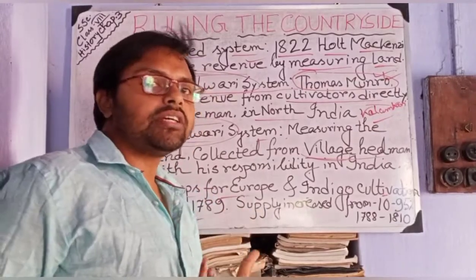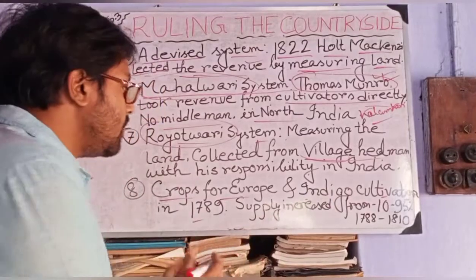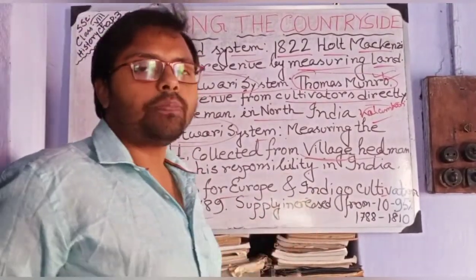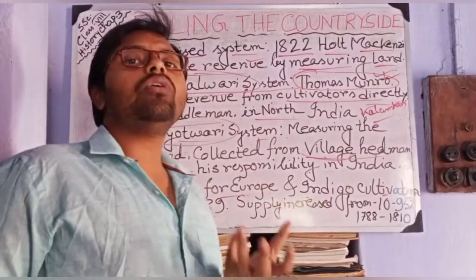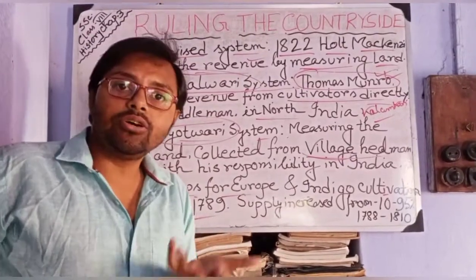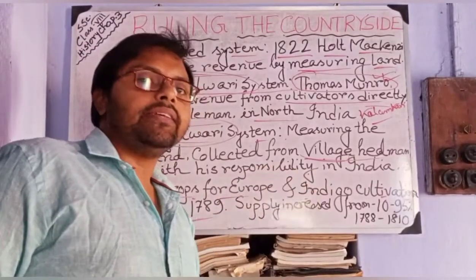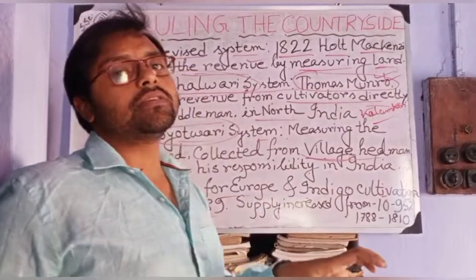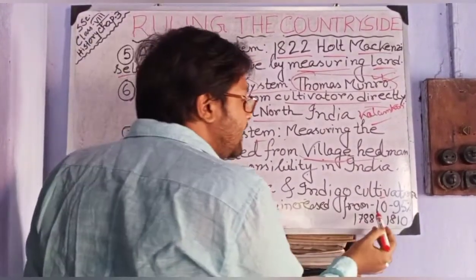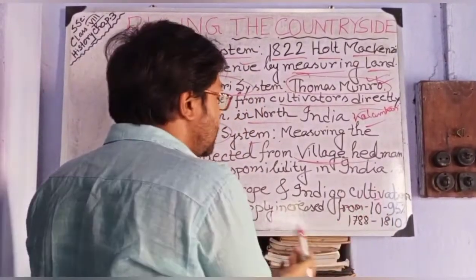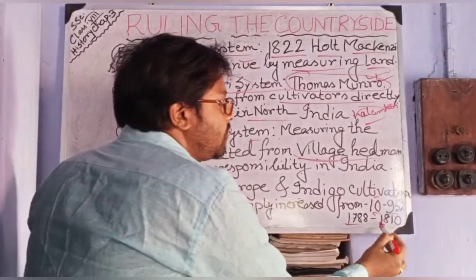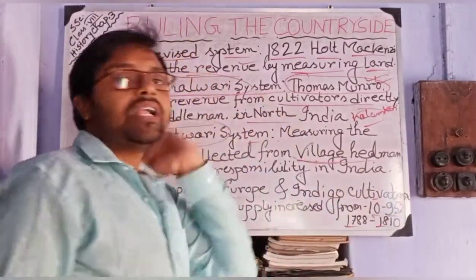In 1789, Indigo cultivation was started. In European countries like Germany and France, Indigo was used in huge amounts for dyeing white clothes. But at that time in Europe, production had decreased. So they wanted to fill their demands from India and pressurized cultivators to produce Indigo in India. As a result, Indigo production increased from 10% to 95% between 1788 and 1810.